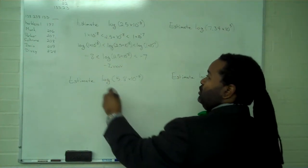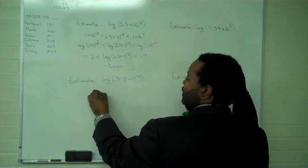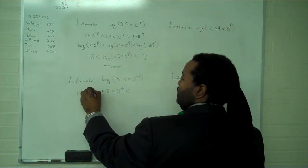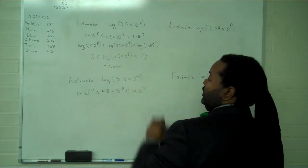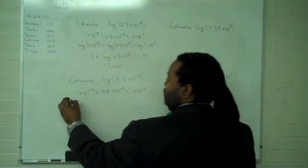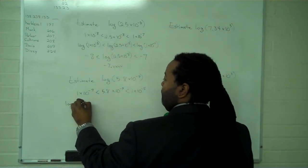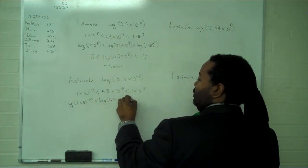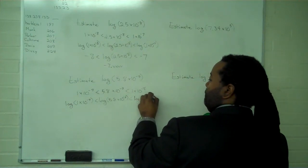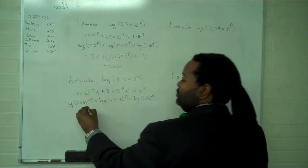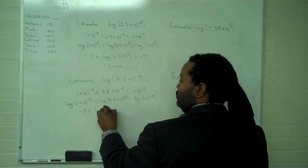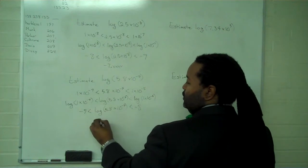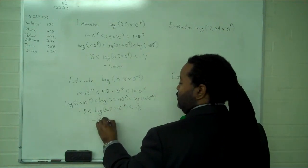The same thing applies here. We want to sandwich this number between two values. We know that 1 times 10 to the negative 9 is smaller, and 1 times 10 to the negative 8 is larger. We take the logarithm of everything. This value will be negative 9, and the upper limit will be negative 8. So we estimate this value at negative 8 point something.